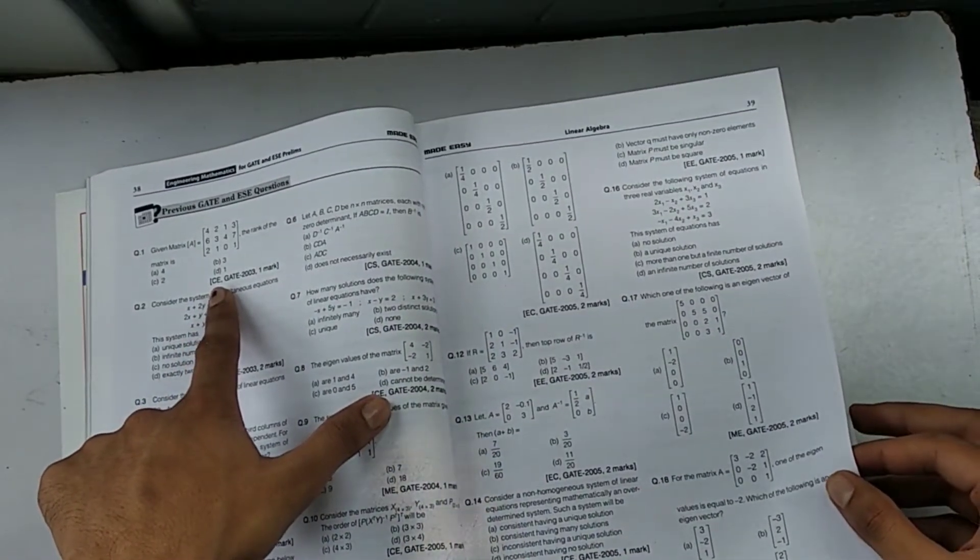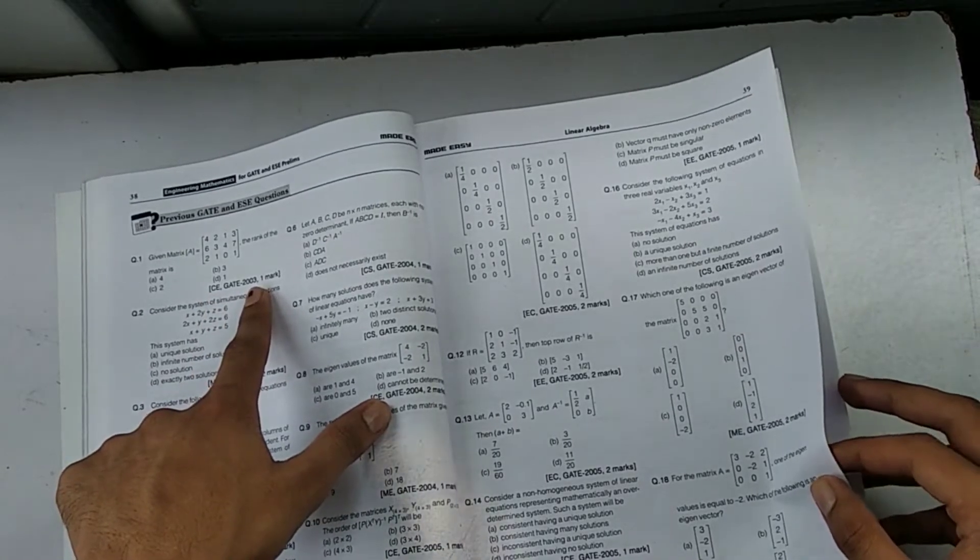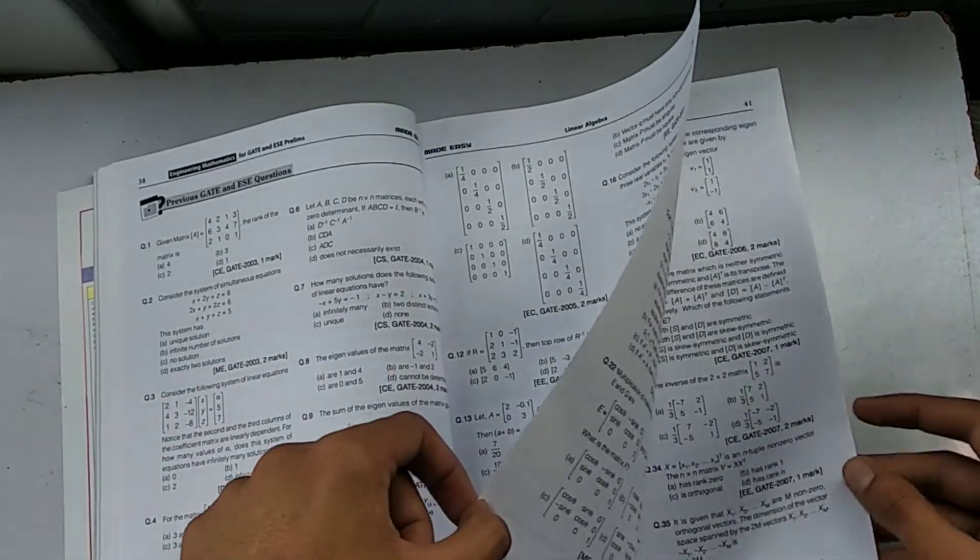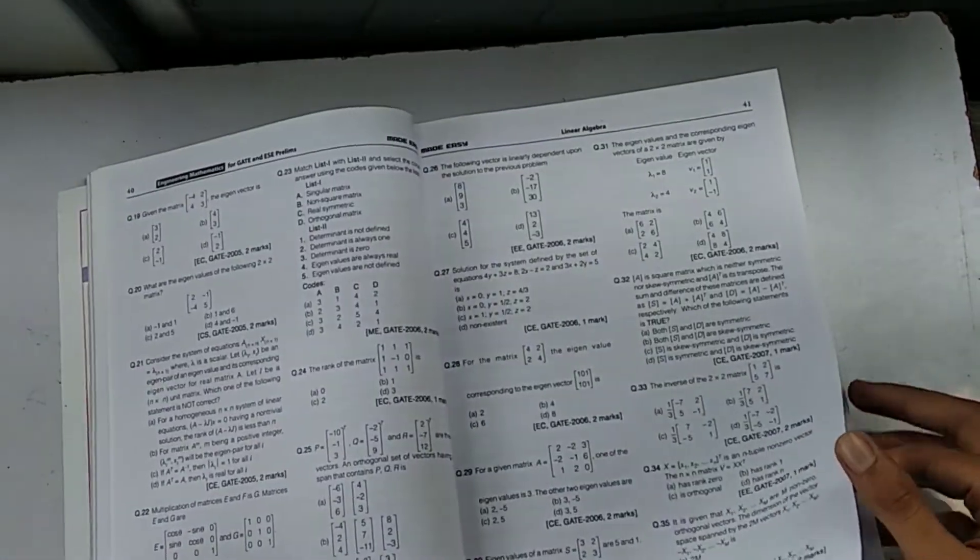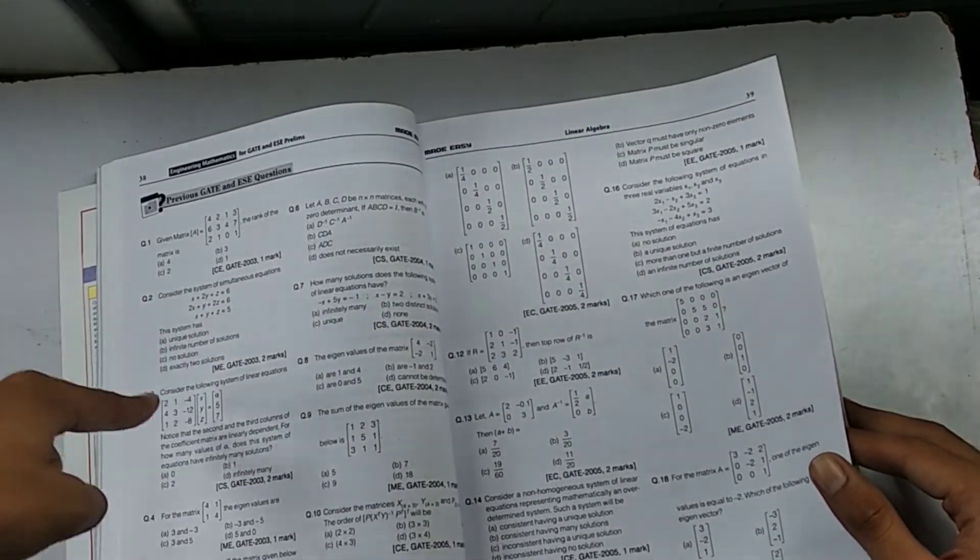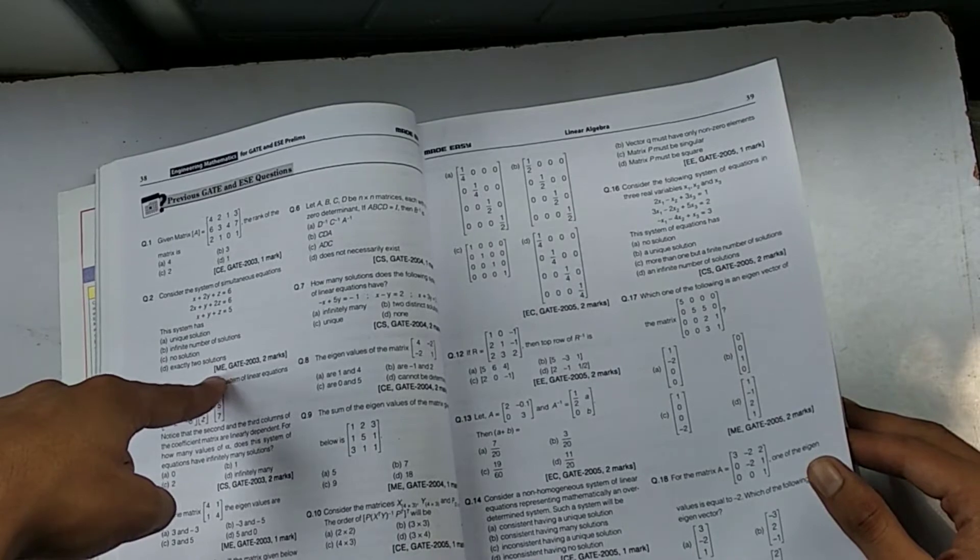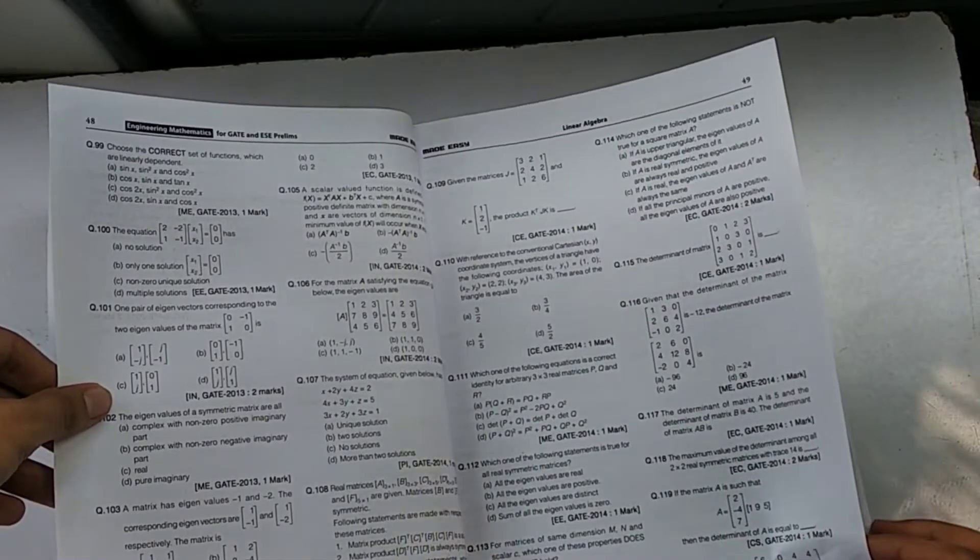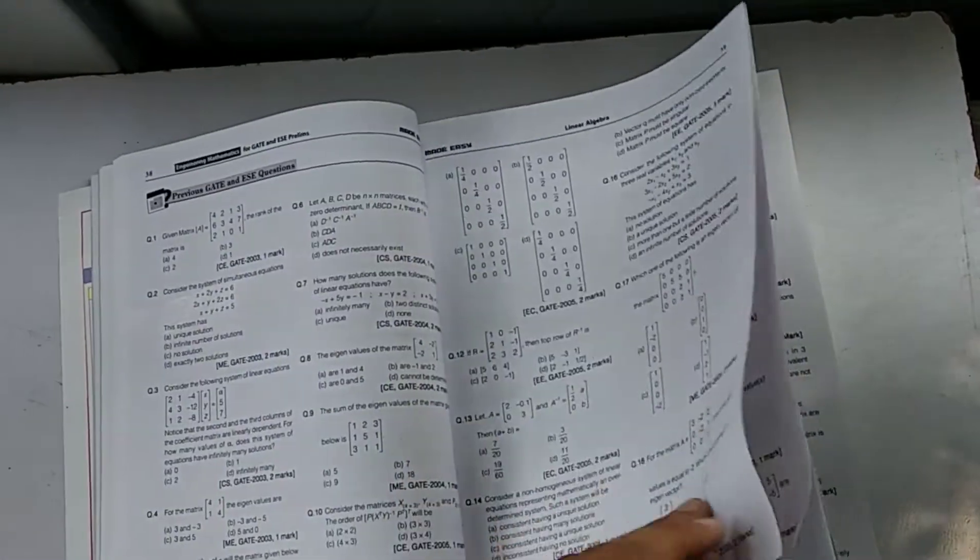Here's how it is - for example, the first question is from Civil Engineering. CE is given, the year in which the question was asked, the exam in which it was asked, and the marks - how much marks it was asked is given here. It's for one mark. For example, here is one question from Mechanical GATE 2003 for two marks. Other branches are also given - EC, EE, and CS.